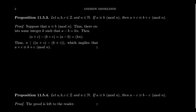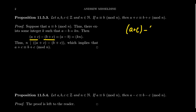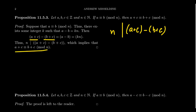Let's prove this. Suppose A is congruent to B modulo N, meaning there exists an integer K such that A minus B equals K times N. We want to show A plus C is congruent to B plus C, so we consider their difference: (A plus C) minus (B plus C). The C's cancel, giving A minus B, which equals K times N. Therefore N divides the difference, proving A plus C is congruent to B plus C modulo N.